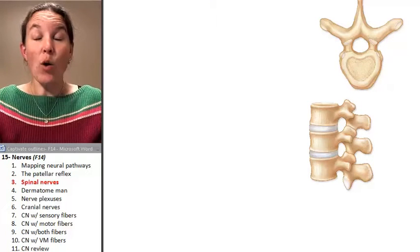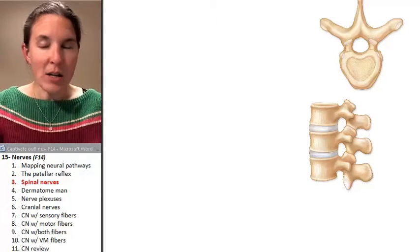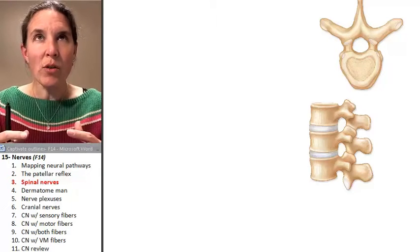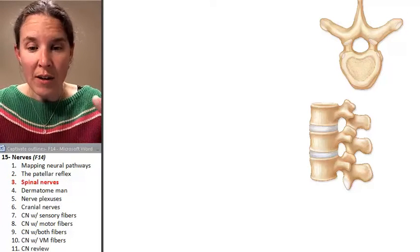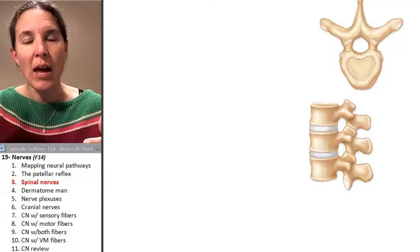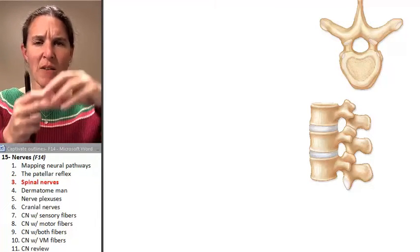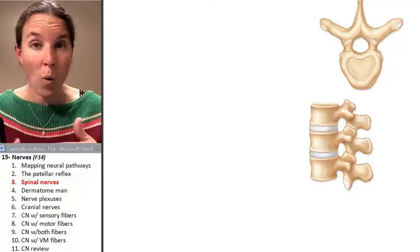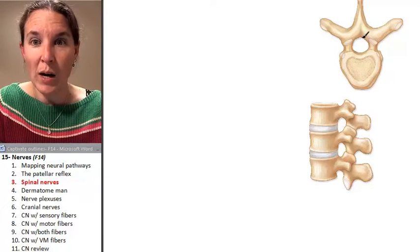We actually have 31 pairs of spinal nerves. And I hope you remember that our spinal nerves actually travel out of the spinal cord. They travel away from the spinal cord, and they have to get out of that main hole, this hole right here.